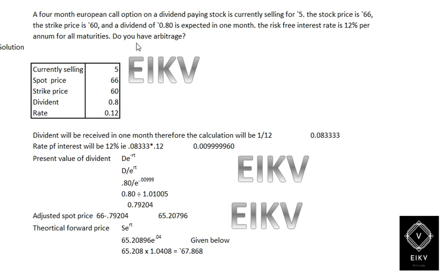Do we have arbitrage? We need to find whether arbitrage occurs. Arbitrage occurs when the theoretical forward price and the actual forward price are equal. If there is any difference, there would be an arbitrage opportunity.